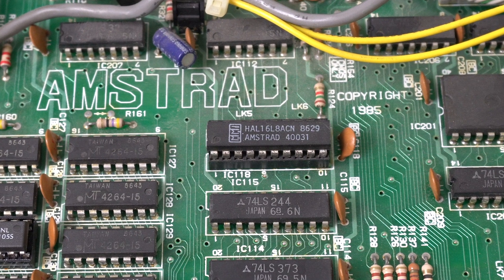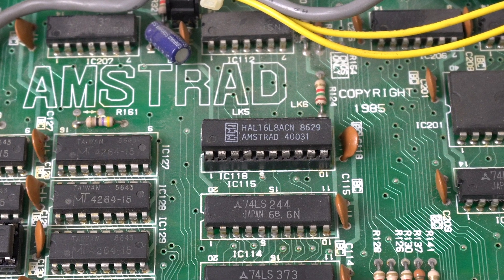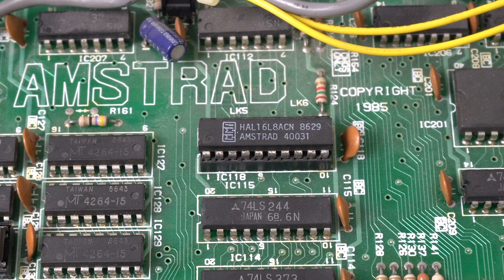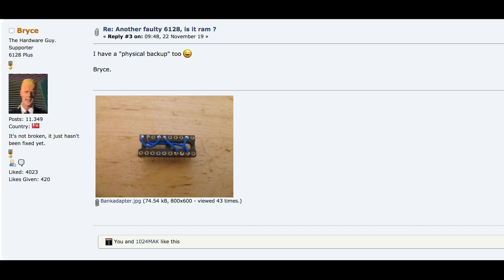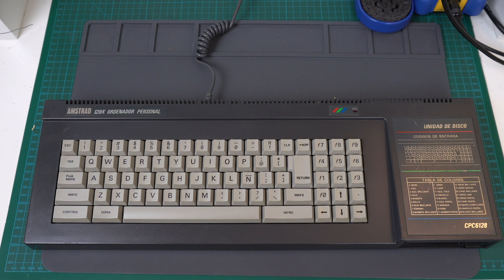And to make things easier, the HAL is actually socketed in all 6128 models — I have no idea why, but that's quite convenient. The only problem is that it's a bit fiddly making those connections, getting the right pins and cutting the right cables to the right length. But it turns out that Bryce from CPC Wiki had the bright idea to actually make those connections on a 20-pin socket and soldering them there permanently. That way, whenever you want to force the upper bank, you just remove the HAL, insert the modded socket, and you're done.